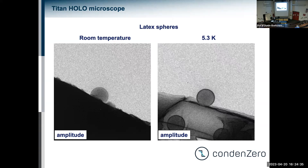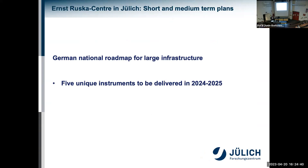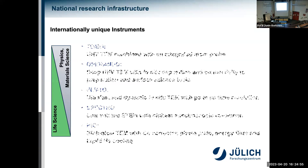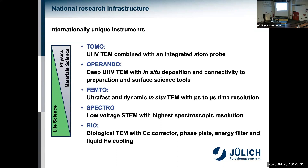We have bigger ambitions. In Germany, we've managed to put electron microscopy on the same funding stream as synchrotrons, satellites, and telescopes, and we've ordered a set of new instruments — all ultra high vacuum electron microscopes that go beyond what is available commercially. These include a combined atom probe and TEM, a deep UHV electron microscope with in-situ deposition — including pulsed laser deposition in the electron microscope — and connectivity to surface science equipment, plus a number of other unique instruments offering better temporal resolution, better spectroscopic sensitivity, and better biological imaging capabilities.